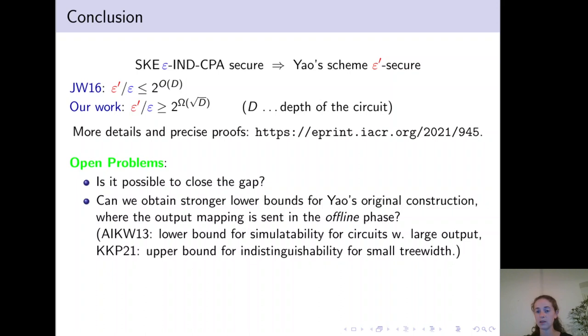Another interesting problem would be if one can achieve a stronger lower bound for Yao's original construction, where the output mapping is sent in the offline phase. Recall that Applebaum et al. already proved a lower bound for simulatability for Yao's original construction for circuits with large output.